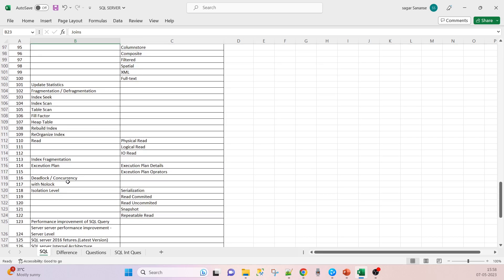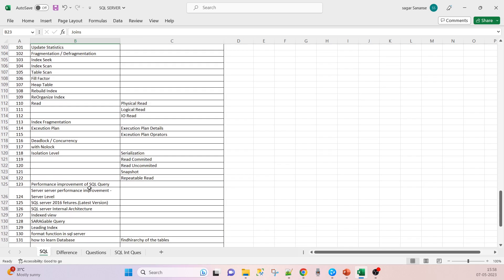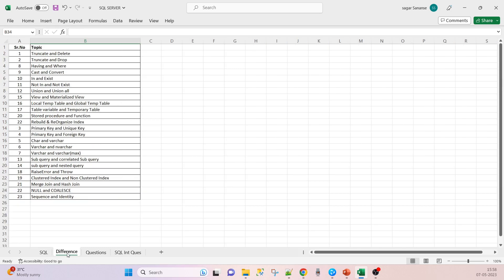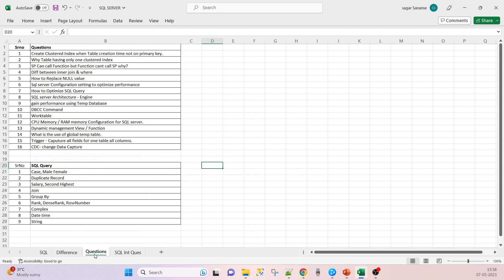Then fragmentation percentage, deadlocks, and isolation levels. We will also cover differences like truncate vs delete, truncate vs drop, union vs union all. We will cover all these sections one by one in upcoming sessions.